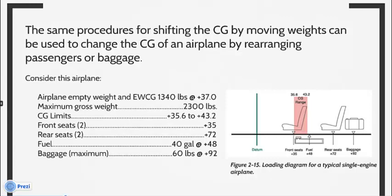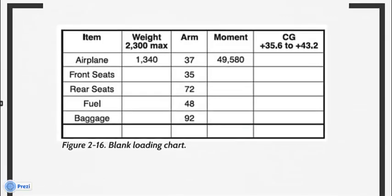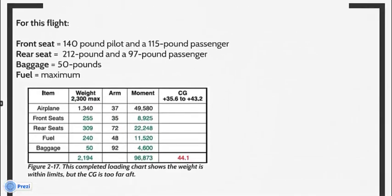Fuel is 40 gallons at positive 48. Baggage maximum is 60 pounds at positive 92. The pilot has prepared a chart with certain permanent data filled in and blanks left for information specific to this flight. For this flight, the 140-pound pilot and a 115-pound passenger occupy the front seats, and a 212-pound and a 97-pound passenger are in the rear seats. There will be 50 pounds of baggage, and maximum fuel is carried for maximum range.